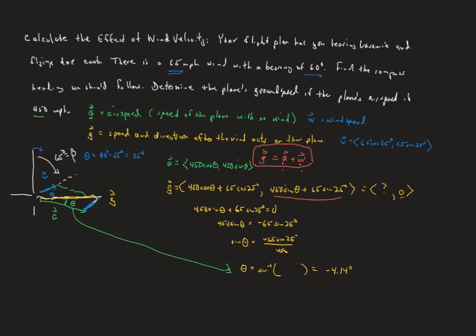Now we want the compass heading — that's our bearing — for the airspeed vector. The bearing goes clockwise from due north down to our angle. Since our direction angle is −4.14 degrees, that's 4.14 degrees beyond 90. Adding those together, our compass heading must be 94.14 degrees — meaning we aim the plane 94.14 degrees clockwise from north, anticipating the wind will push us so we actually go straight east.